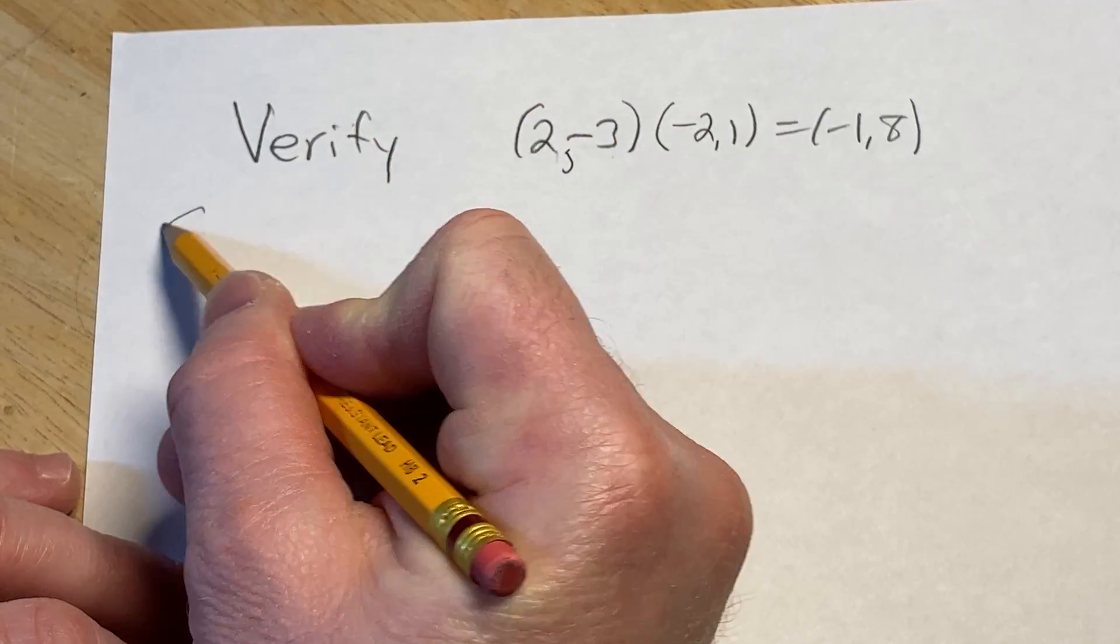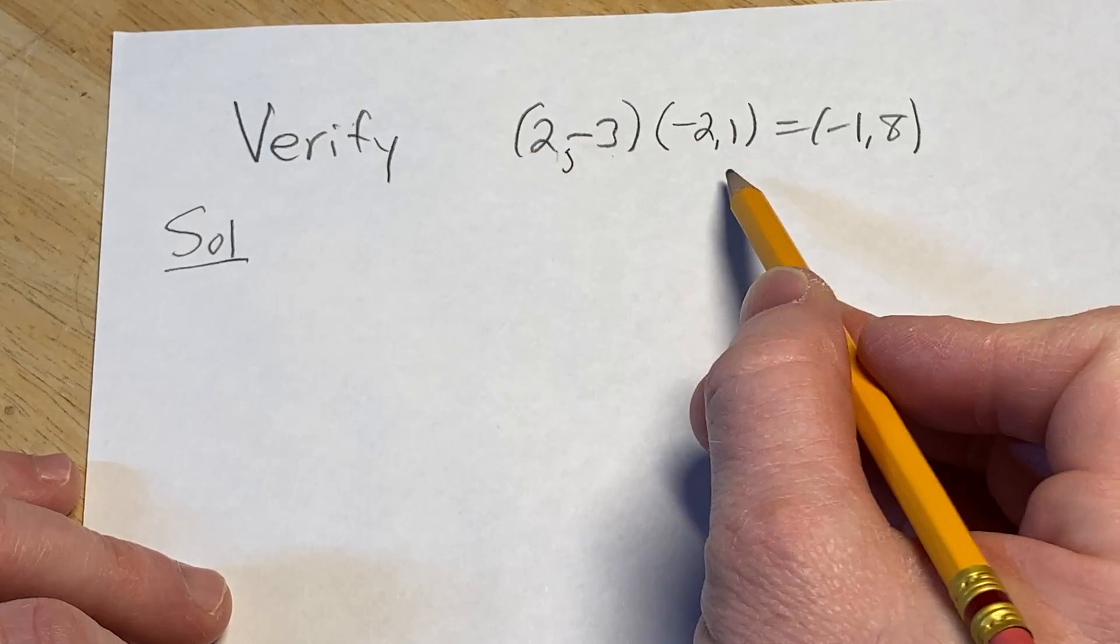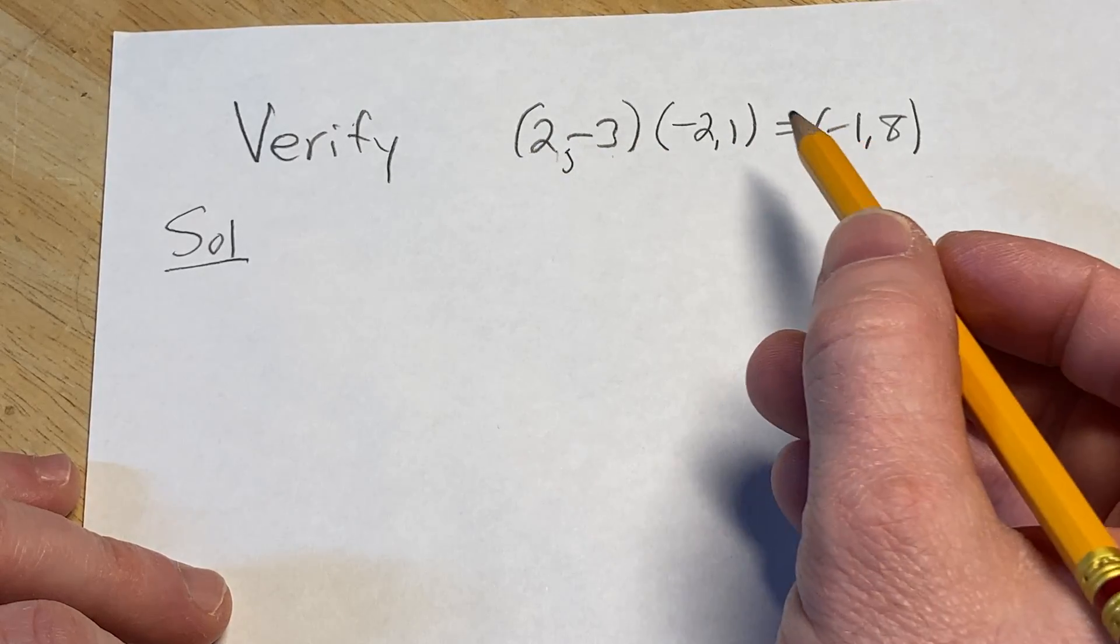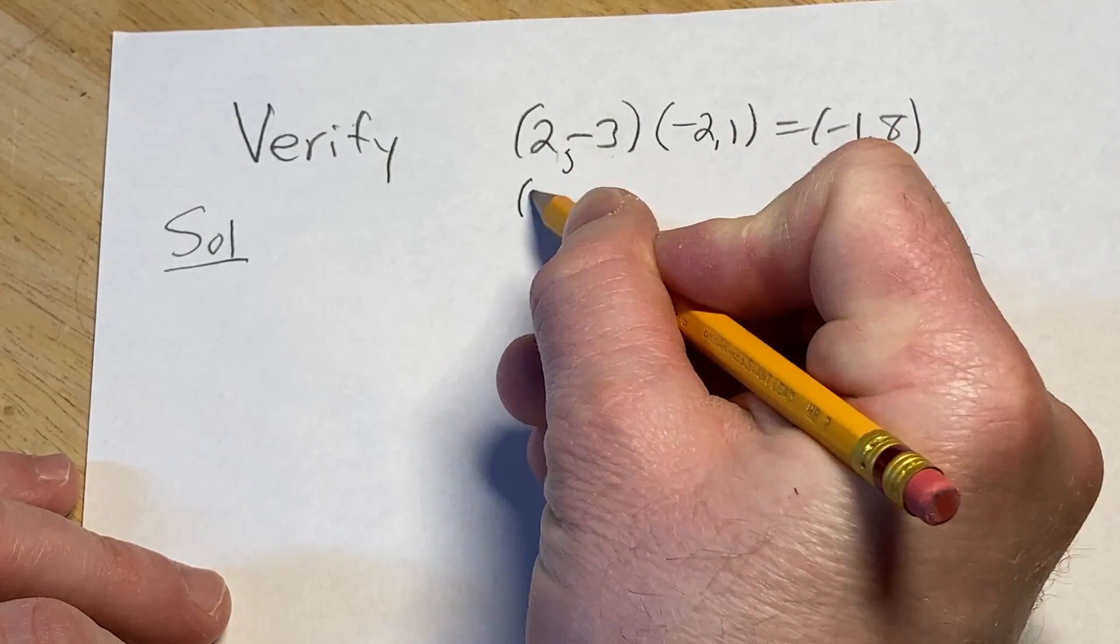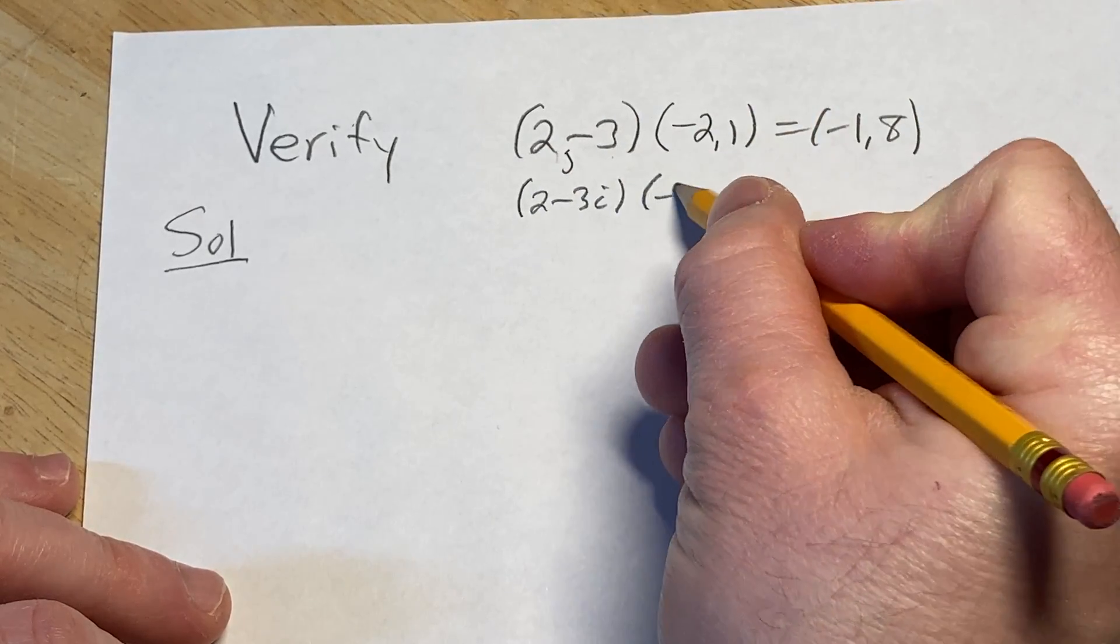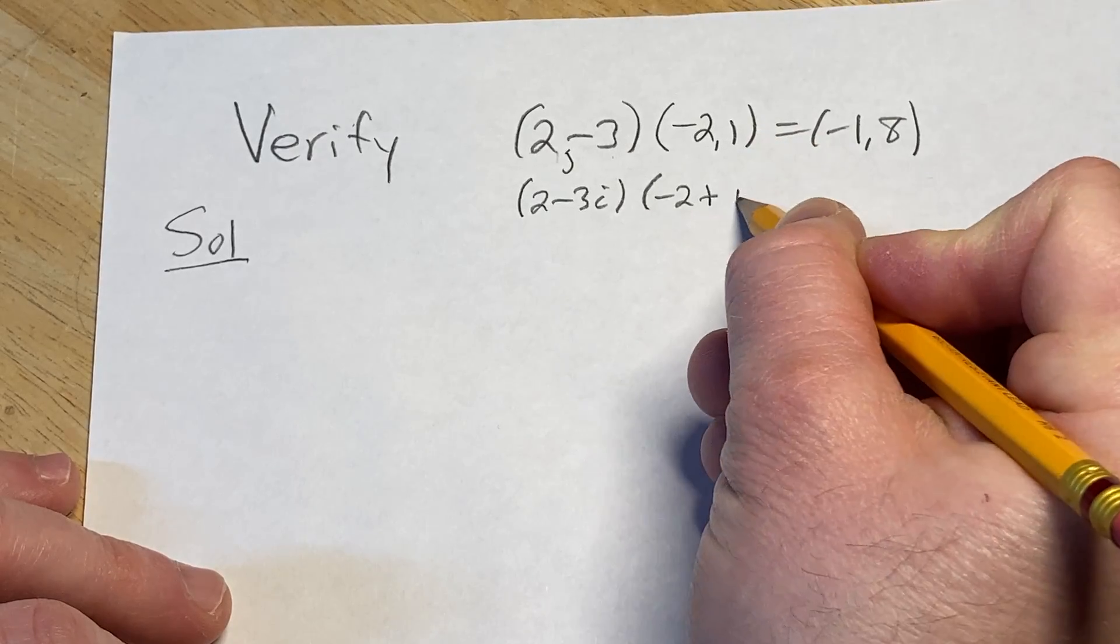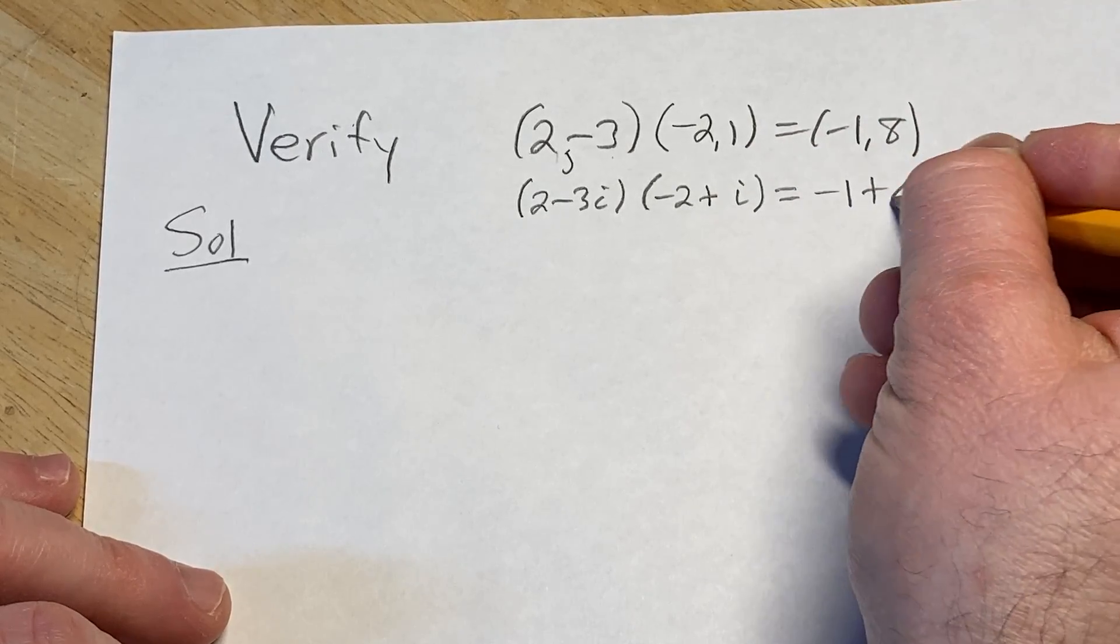So let's go ahead and work through this solution. First thing we're going to do is rewrite this in a way where you might be more familiar with the notation. So basically this is the same as saying 2 minus 3i times negative 2 plus 1i, so i, is equal to negative 1 plus 8i.